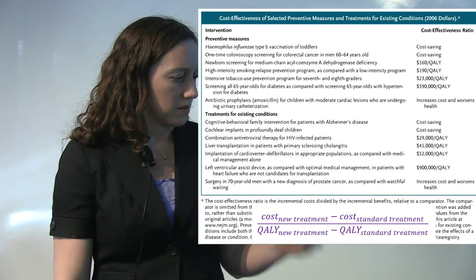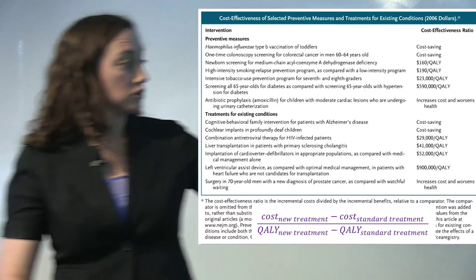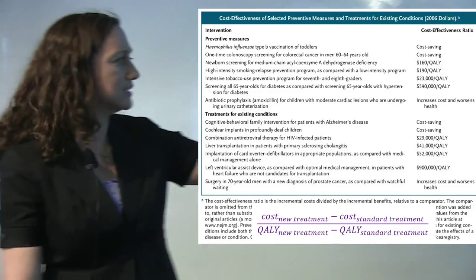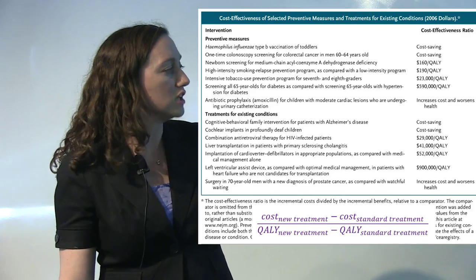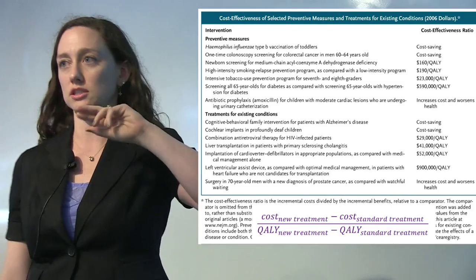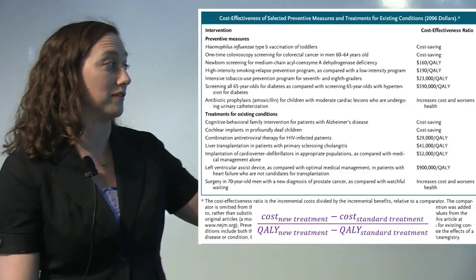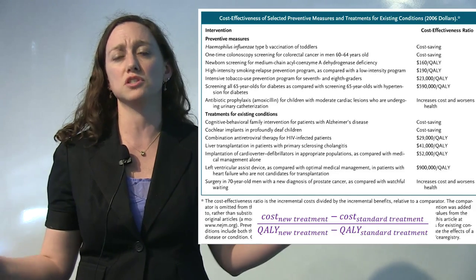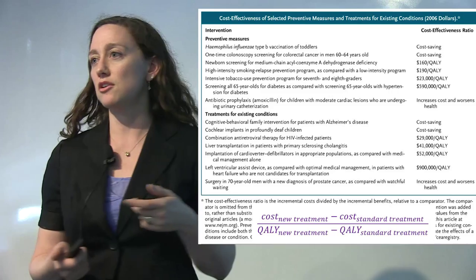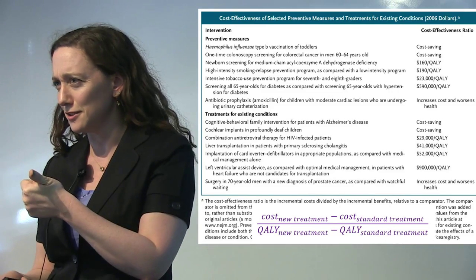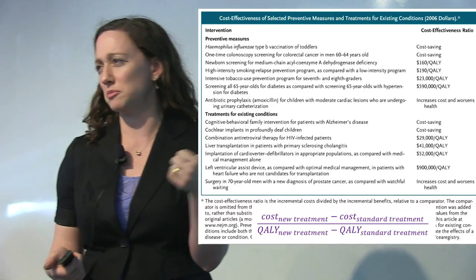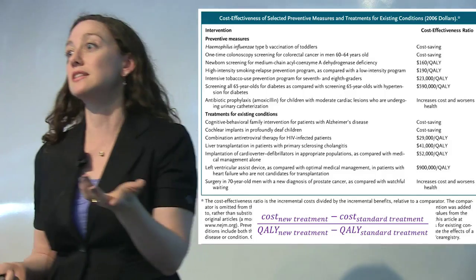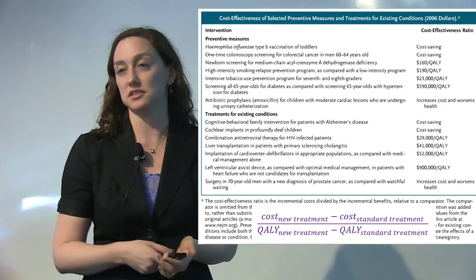Cost-effectiveness is really a ratio. In the numerator, we have how much more does the new treatment cost compared with whatever you would do if that treatment didn't exist. In the denominator, you have QALY — quality adjusted life years — which is roughly how much longer you live, adjusted if you're bedridden or having a very bad day. So it's the quality-adjusted life years you expect under the new treatment minus under the standard treatment.